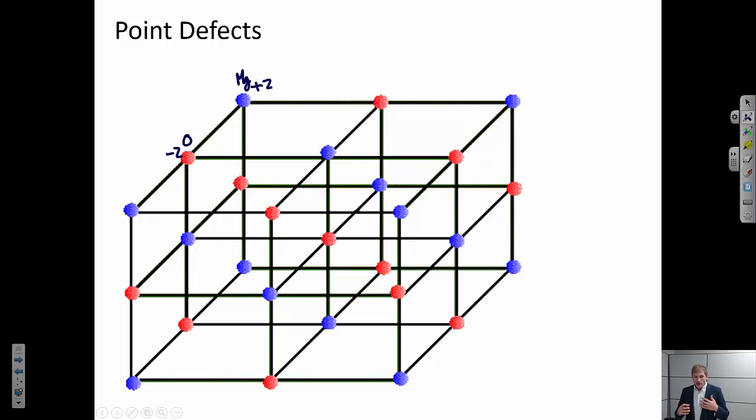So in the ionic case, we can't simply have a vacancy of one of these atoms because that would lead to a charge imbalance in the system. Similarly, we can't just have a substitution of one other charge species in the lattice because that would also lead to a charge imbalance. So the rule is that when we're dealing with ionic compounds, we always need to maintain charge balance.